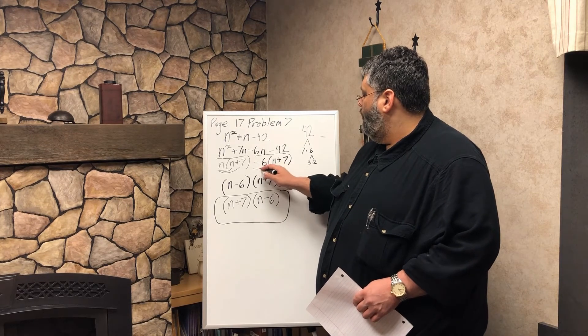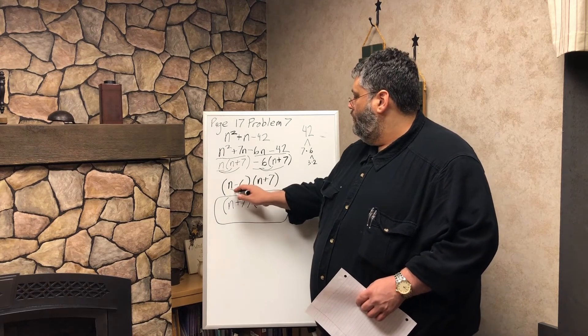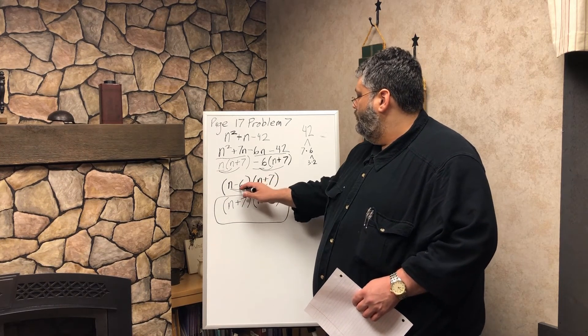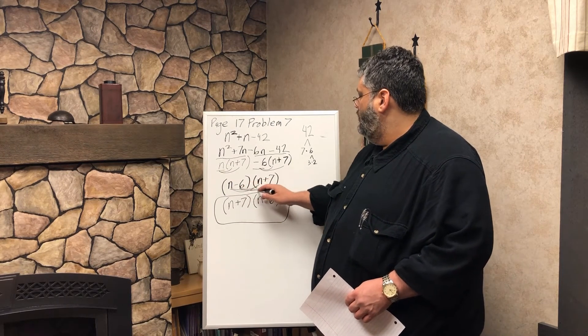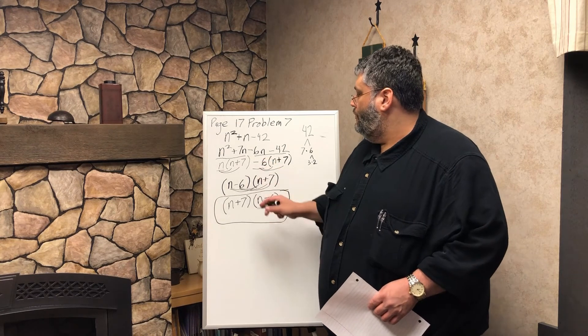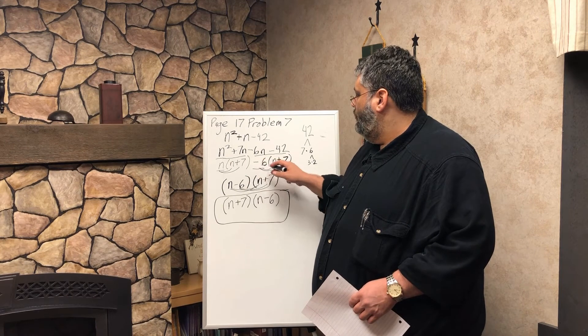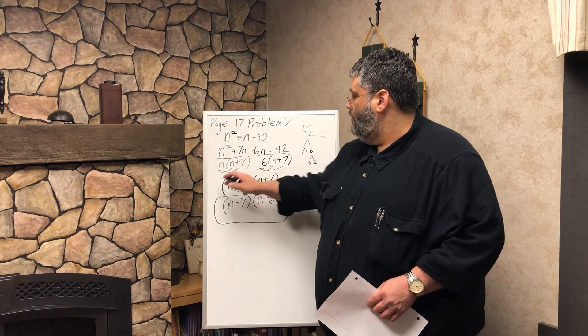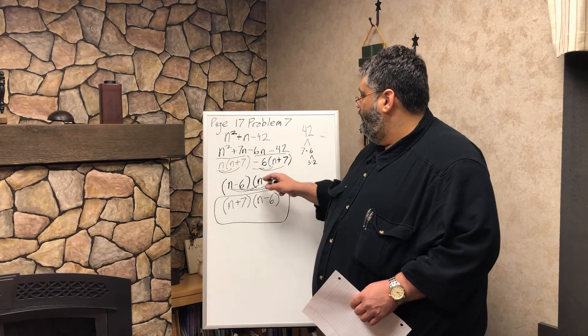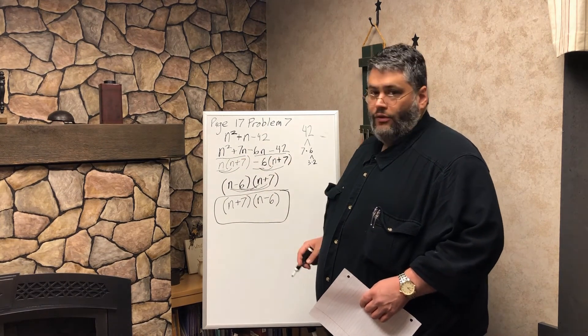So that's no different than distributing in this way. See, that's how we're able to group the n and the minus 6 into one factor, and then the n plus 7, which is common to both there, into another factor.